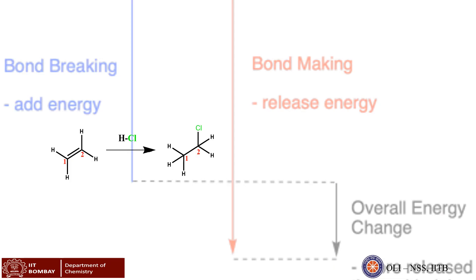Now let us take a simple addition reaction. In this reaction, the double bond between carbon 1 and carbon 2 of ethene or ethylene breaks to form a new single bond in ethane. Also we see bond breaking between hydrogen and chlorine atom of hydrochloric acid.